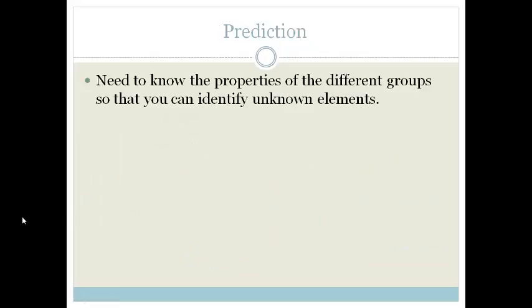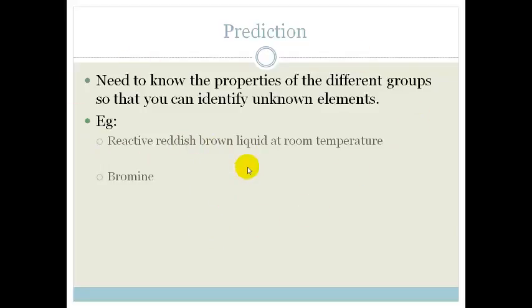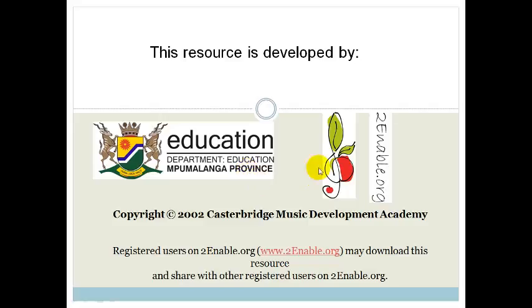So, now you are going to need to learn this information and understand the properties. Because you are going to have to know the properties of the different elements. So, you can identify an unknown element if you are given specific properties. Let's give an example. If I tell you you've got a reactive reddish brown liquid at room temperature, let's think about the only liquids at room temperature on periodic table are mercury, which is a metal and silvery, and brown liquid, reddish brown, it must be bromine. And that is the type of question you are going to have to be able to solve during your assessment. So, please make sure that you have studied your periodic table properly and you've learnt all the different properties so you can answer questions like that. Thank you Great Tens. Have a wonderful day.